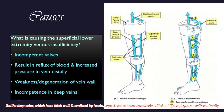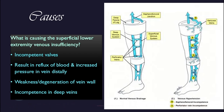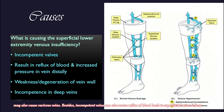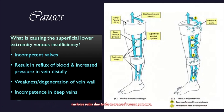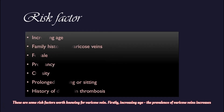Unlike deep veins, which have thick walls and are confined by fascia, superficial veins are unable to withstand the high pressure and eventually become dilated and tortuous. Other pathological factors such as weakness or degeneration of the vein wall may also cause varicose veins. Besides, incompetent deep veins can also cause reflux of blood back to the superficial vein and form varicose veins due to the increased venous pressure.